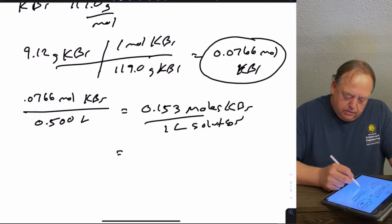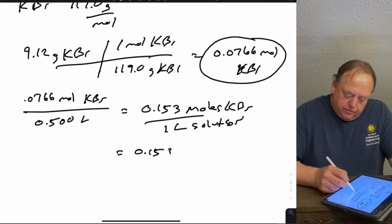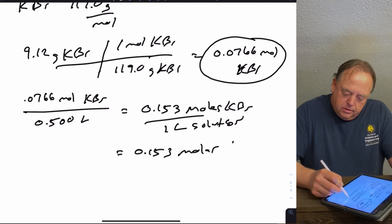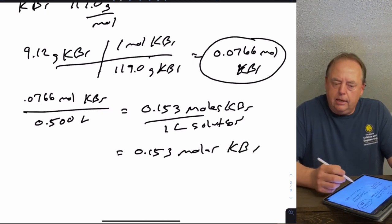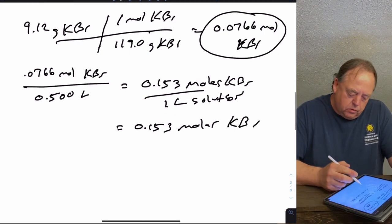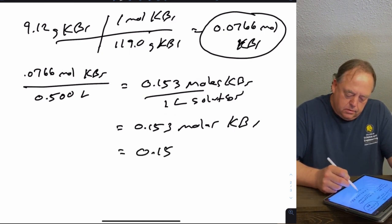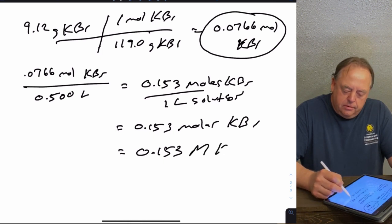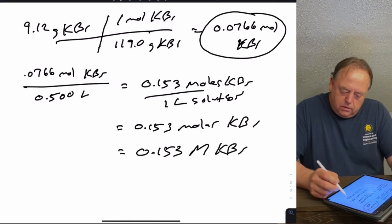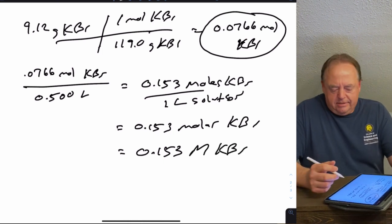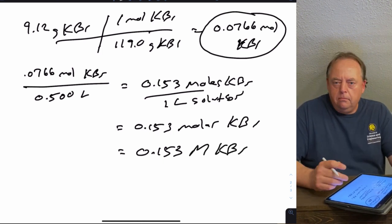That result can be reported as 0.153 molar KBr, sometimes written with a capital M — you need to recognize that capital M means molar.